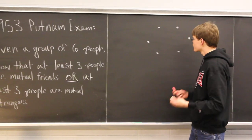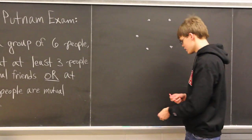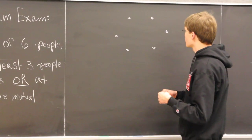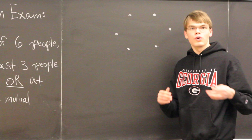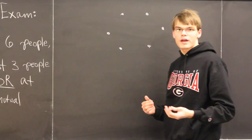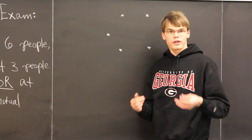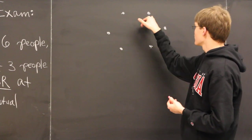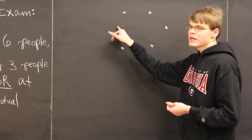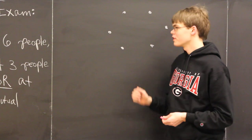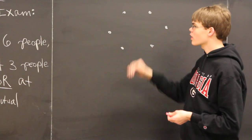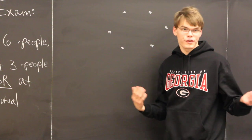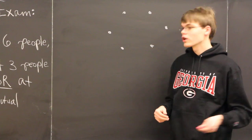The first thing we want to note is that if we can show there's a monochromatic triangle — a triangle of a single color — between any three of these people, we're done. A triangle of a single color will represent three mutual friends or three mutual strangers, depending on the color.